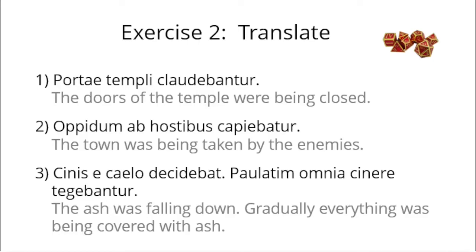And number 3. Kinis e kailu dekidebat. Paulatem omnia kinere tekibantur. In English, the ash was falling down. Gradually, everything was being covered with ash. The vocabulary. Kinis kineris, ash. Kailum, kaili neuter, heaven. De kidere, to fall down. Paulatem, gradually. Omnia, is the neuter nominative plural form of omnis, omnis, omne, all. And tegare tegu, third conjugation, to cover.